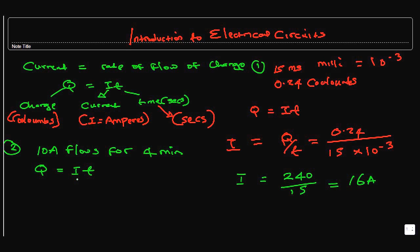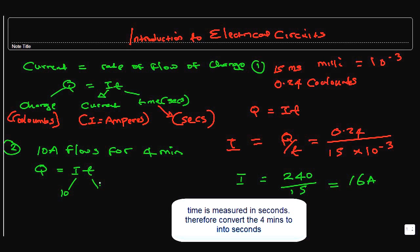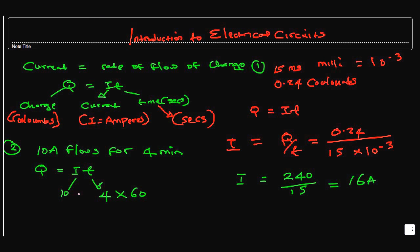We know that I is 10. T is 4 minutes, so 4 minutes is 4 times 60. What we have is 10 times 4 times 60, which gives us 2400 coulombs.